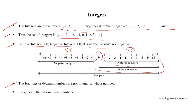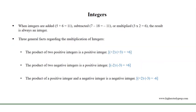Fractions or decimal numbers are not integers or whole numbers. Integers are the rational, real numbers. When integers are added, subtracted, or multiplied, the result is always an integer.